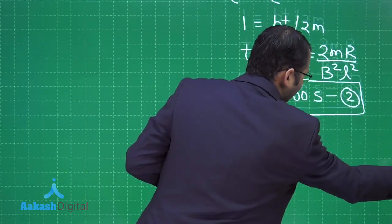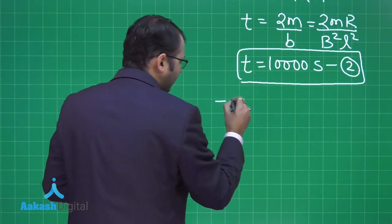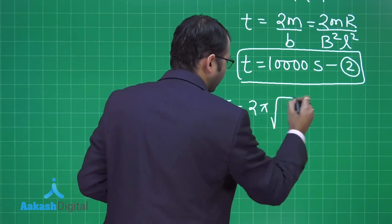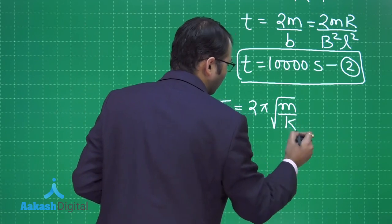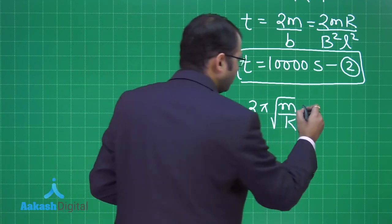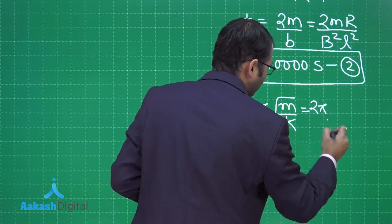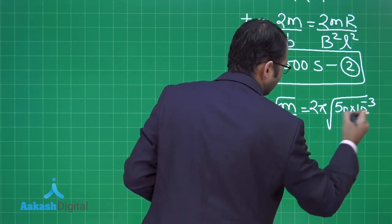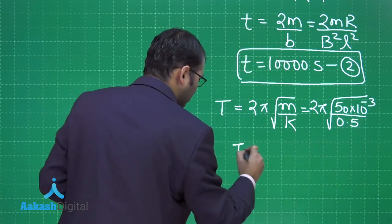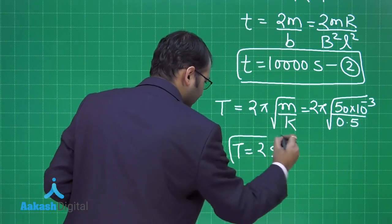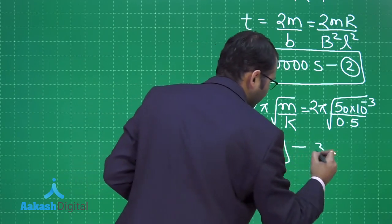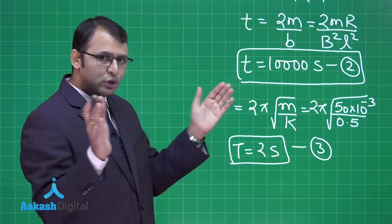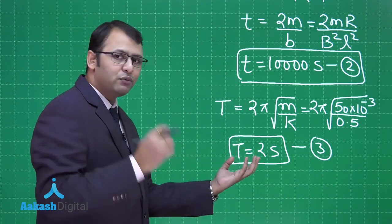To find the number of oscillations, we need the time period of one oscillation: T equals 2π times the square root of m/k. With mass 50 grams and k equals 0.5 N/m, that gives T equals 2π times the square root of (50×10⁻³/0.5), which works out to a time period of 2 seconds.